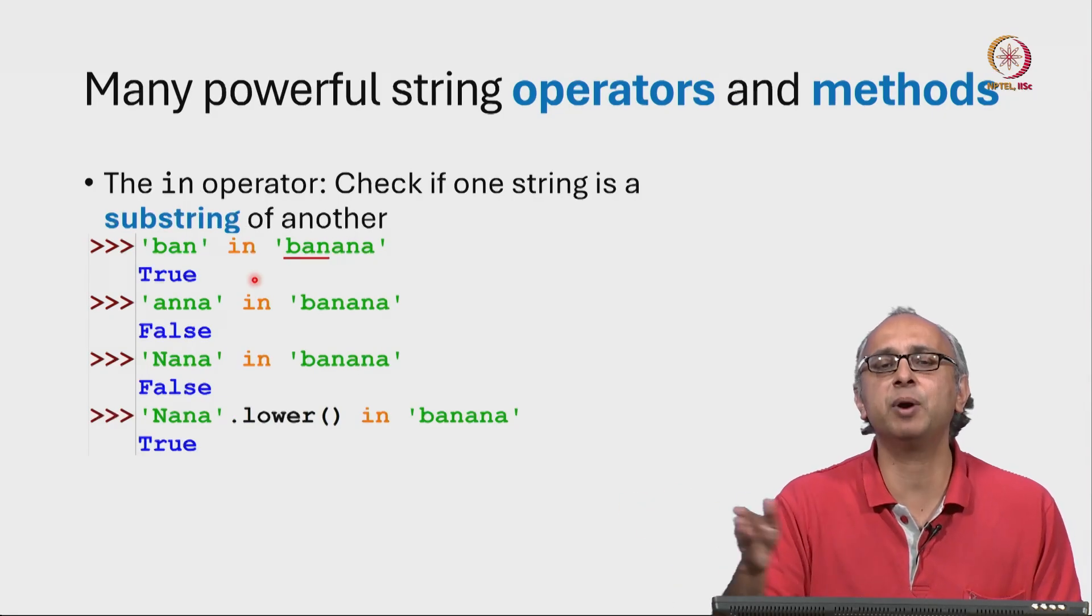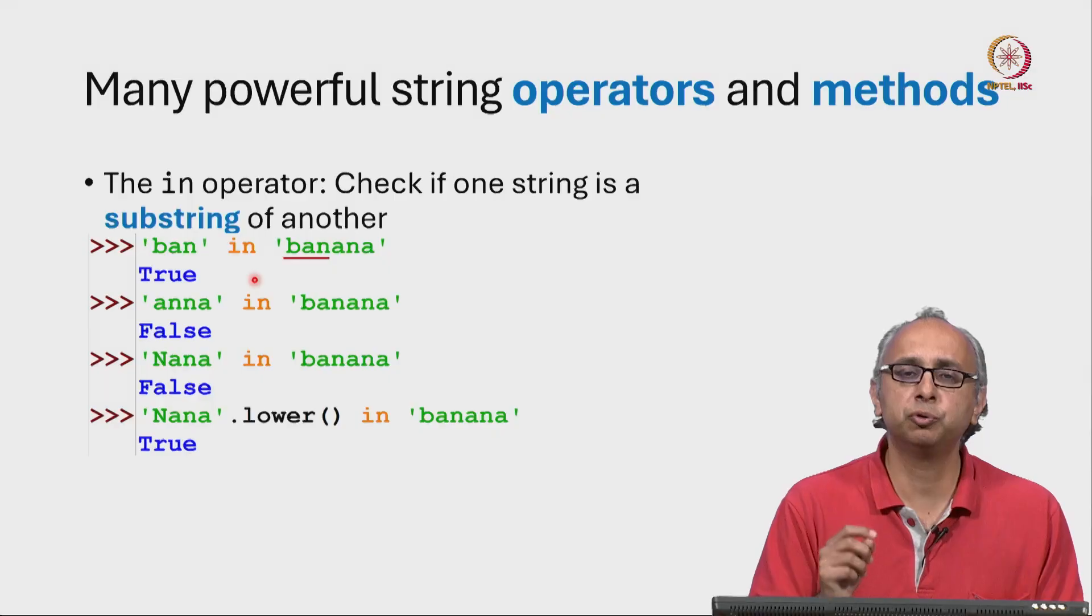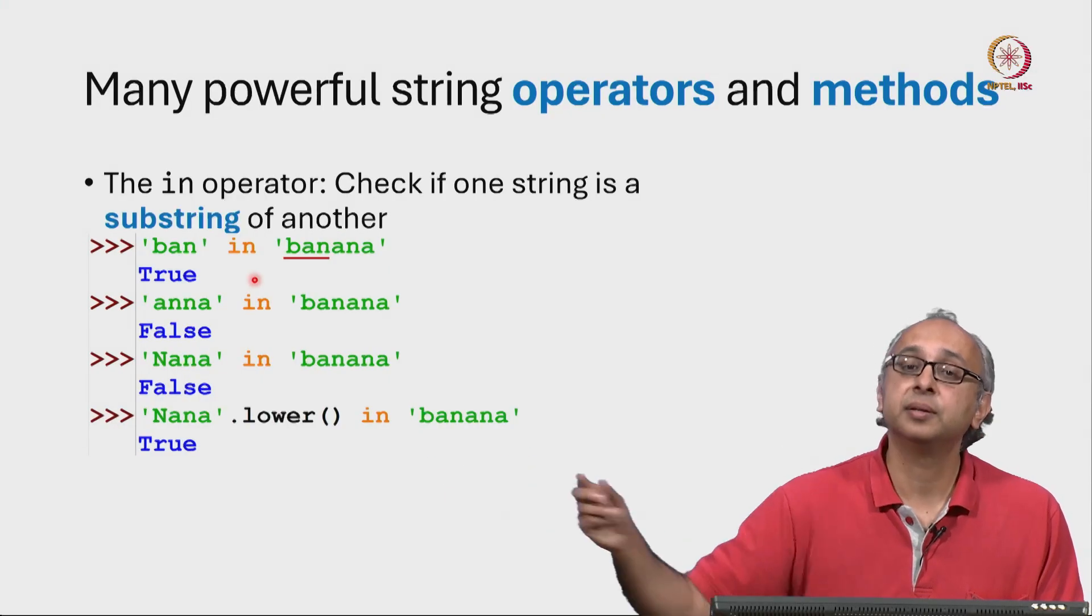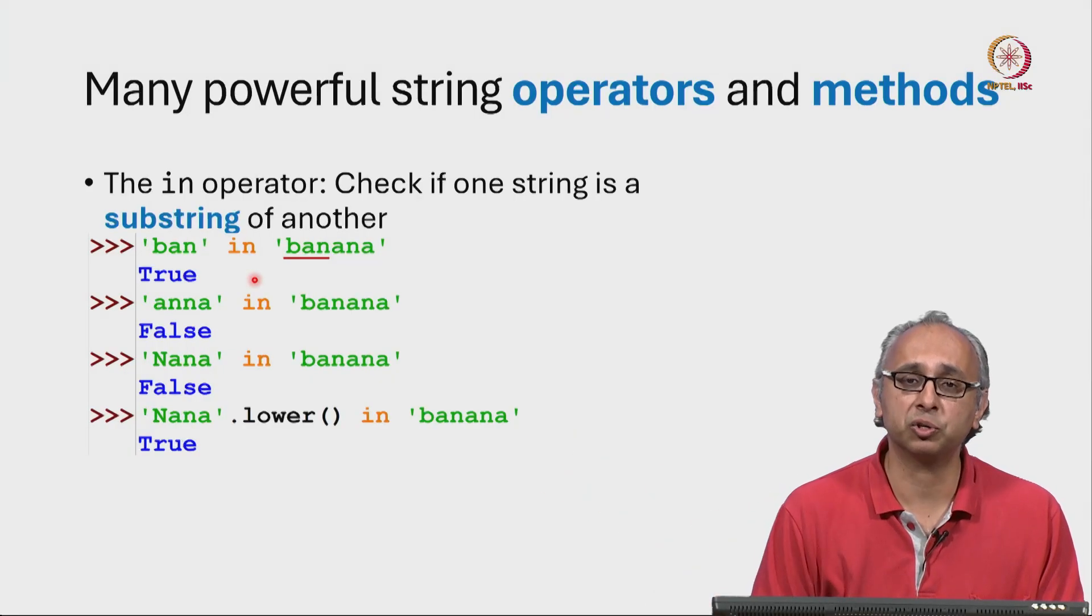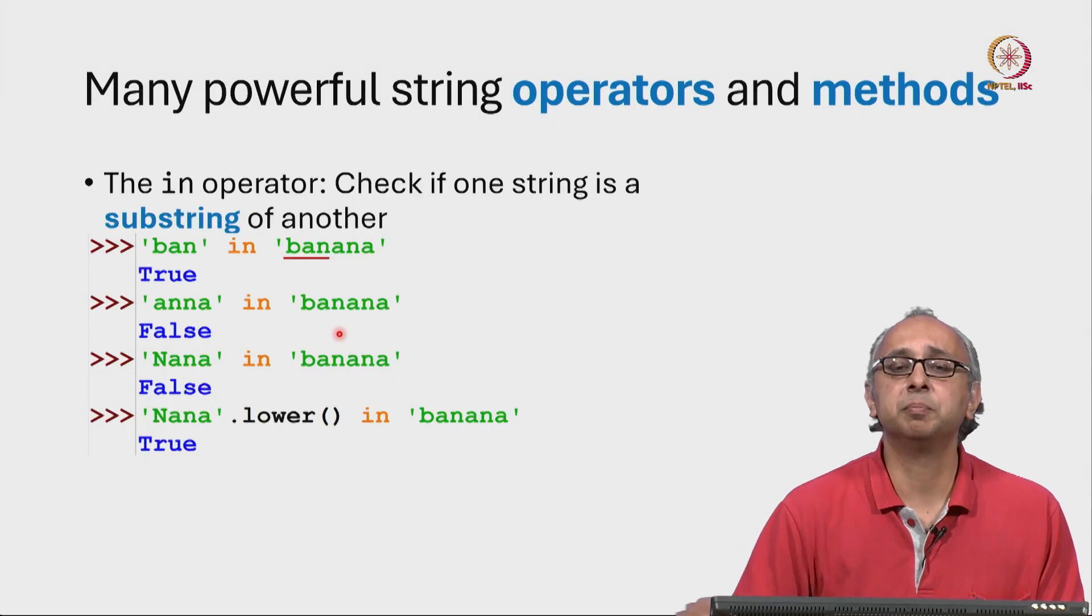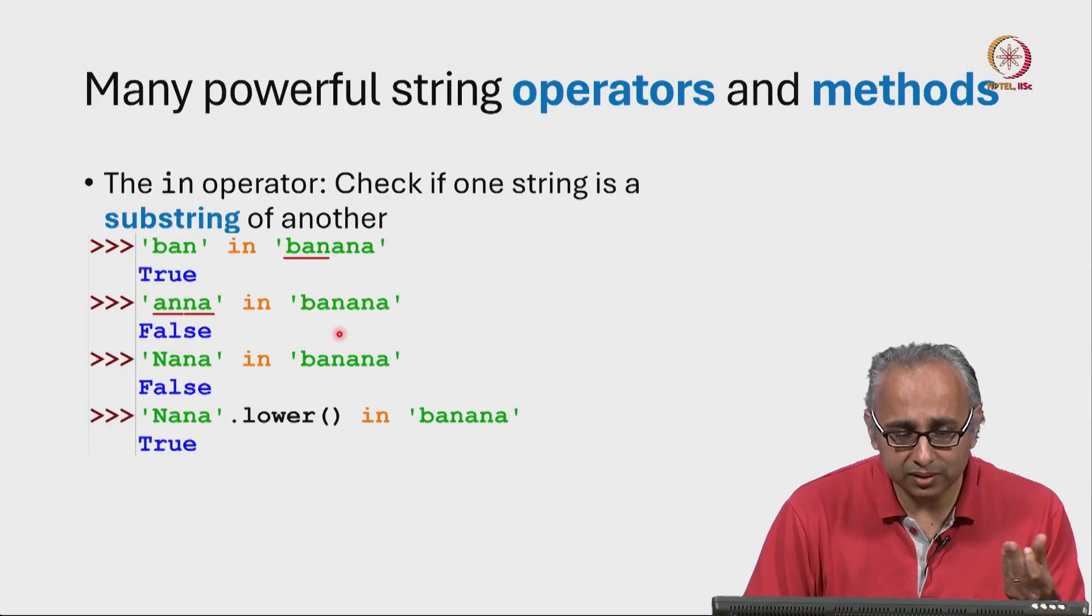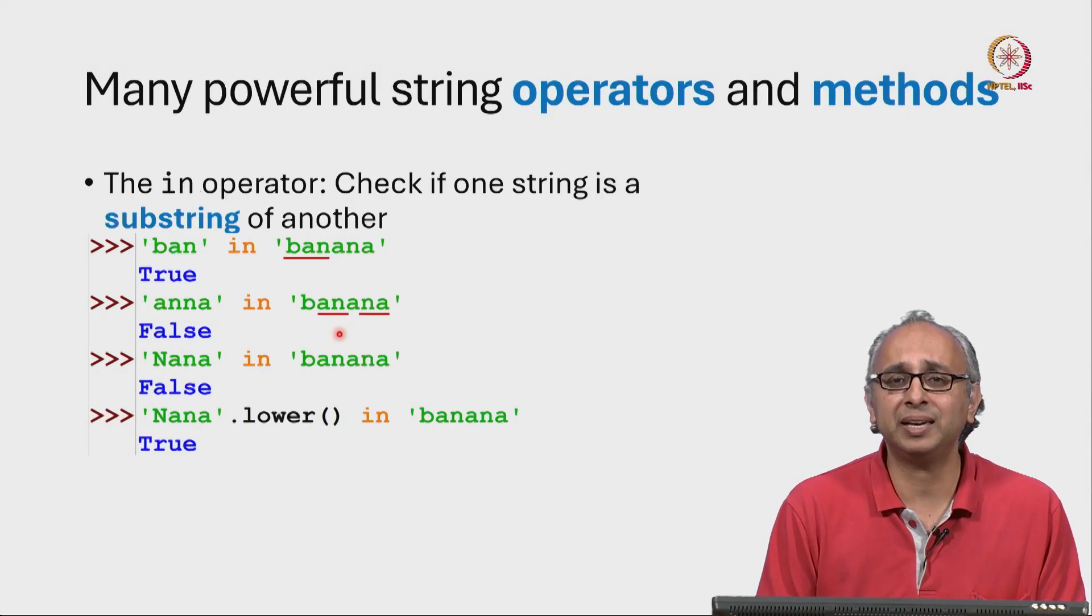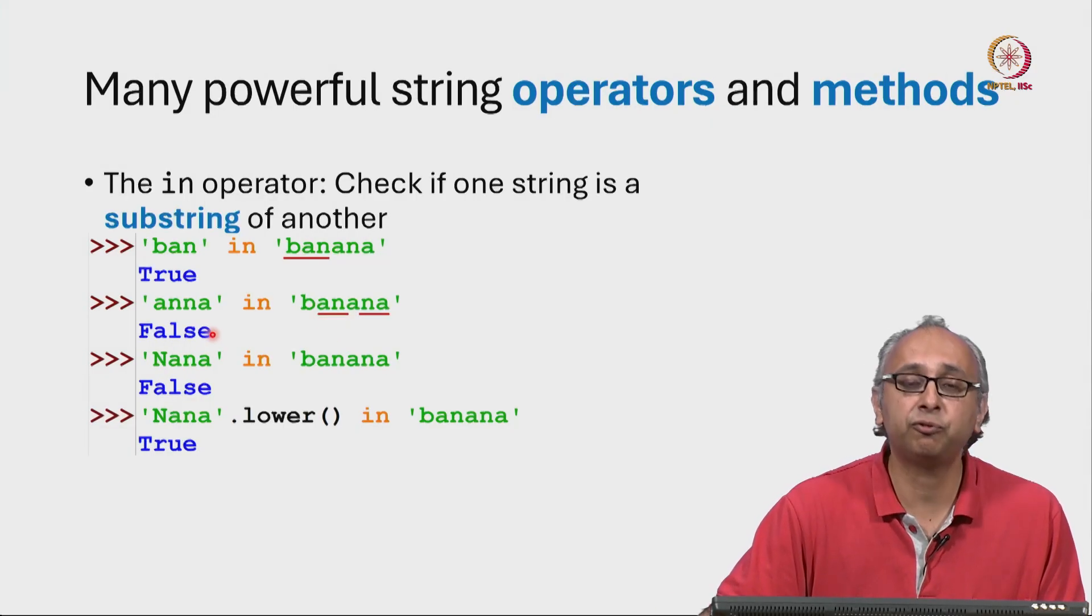But in general, if I could find it anywhere in the string, this would have returned true. So you could say for example, 'ban' in 'three bananas' and again it would return true because it's somewhere in that long string. What about 'Anna' in 'banana'? You could argue that Anna does appear in banana. Of course, it's not consecutive, it's got a little bit of a gap. And because it's got a little bit of a gap, the answer is false.